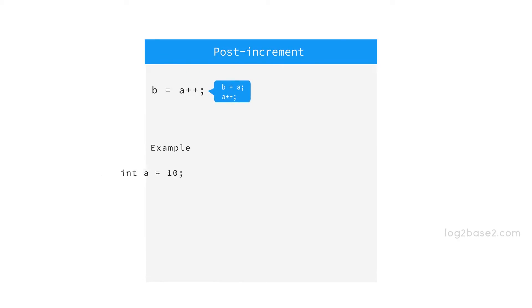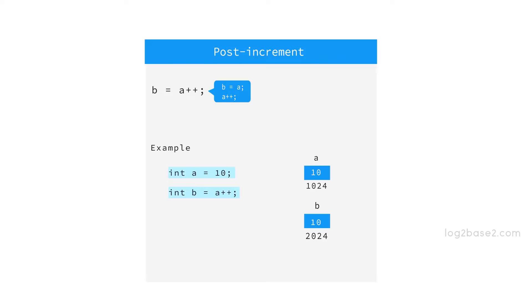Let a equal to 10 initially, and we have b equal to a plus plus. So the value of a, that is 10, will be returned and stored in b first, and then a is incremented and it will become 11.